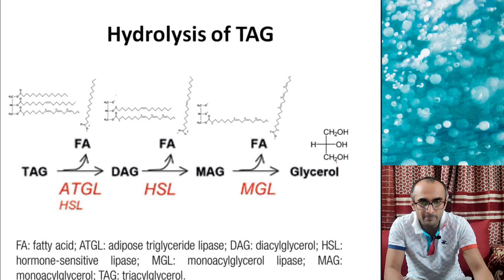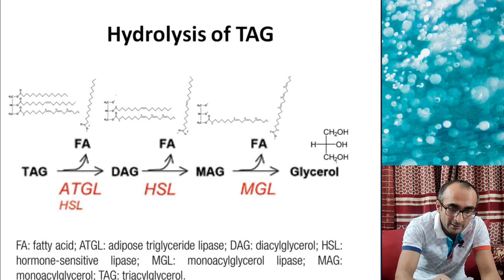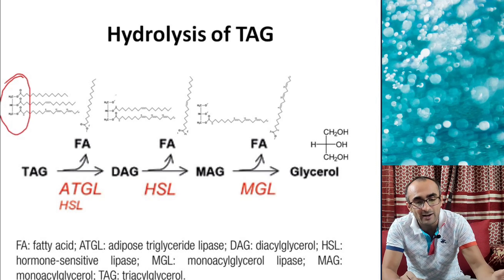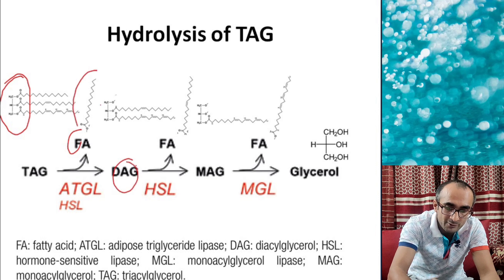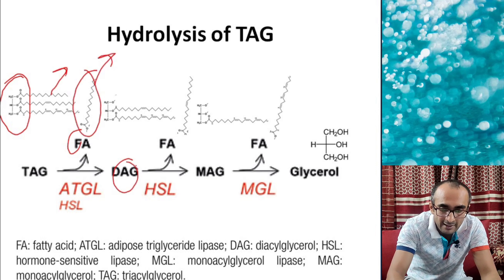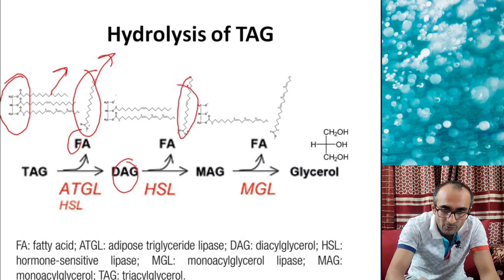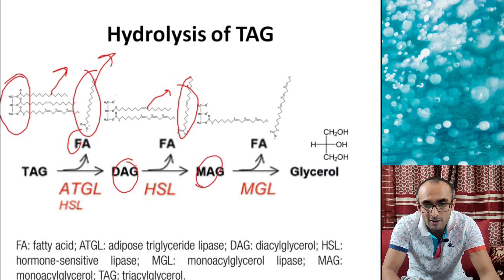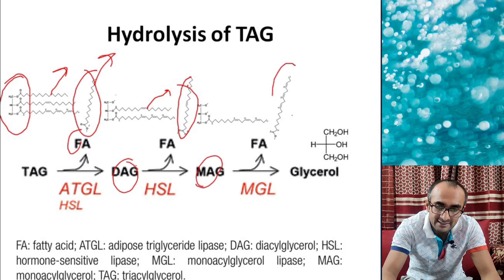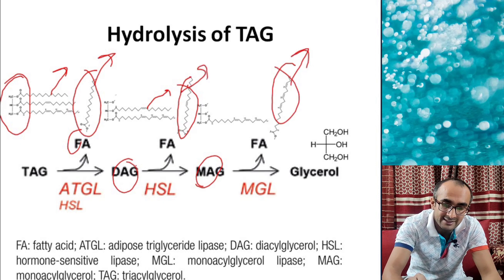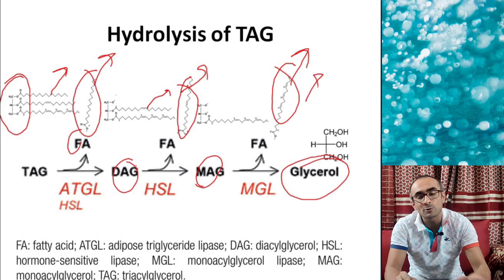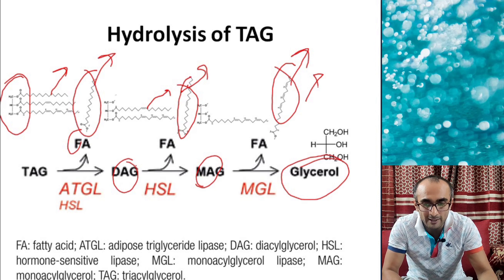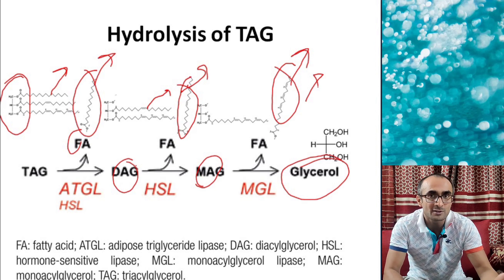To summarize triacylglycerol hydrolysis: ATGL removes a fatty acid from the sn-1 position to produce diacylglycerol. Hormone-sensitive lipase (HSL) then removes another fatty acid from diacylglycerol to produce monoacylglycerol. Monoacylglycerol lipase (MGL) removes the final fatty acid, yielding free glycerol and three free fatty acids. The fatty acids go to cells for oxidation to produce energy, while the glycerol is used for glucose synthesis in gluconeogenesis.